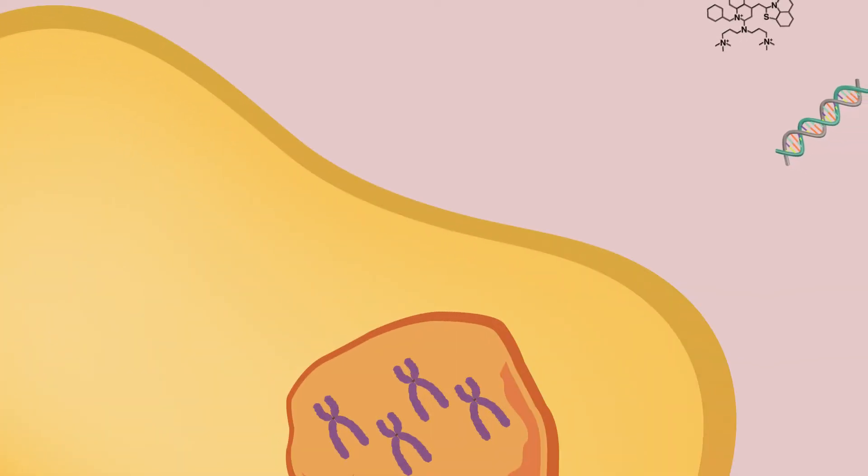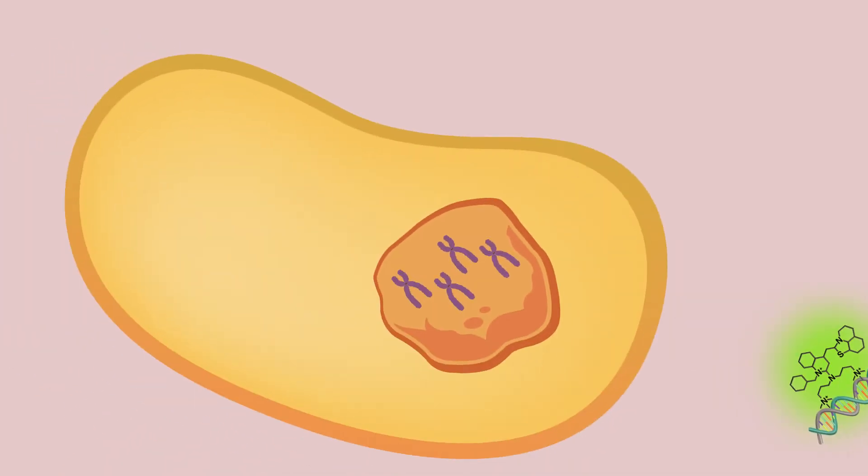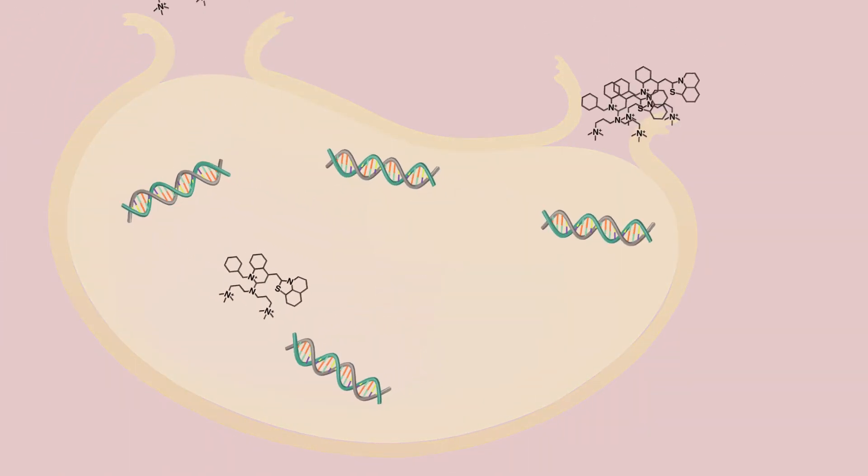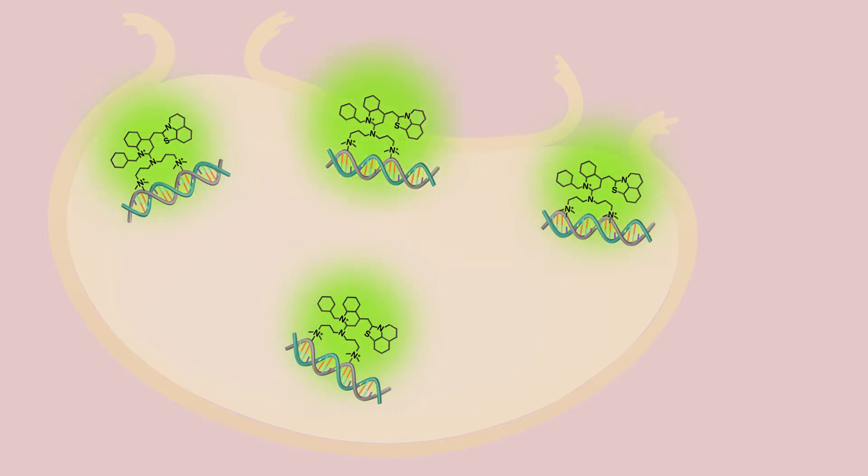The assay contains a non-toxic dye that binds to the DNA of dead or damaged cells but is excluded from viable cells. Once a cell undergoes a cytotoxic event, the dye binds to exposed DNA and produces a fluorescent signal.